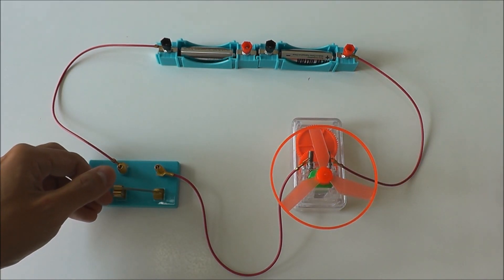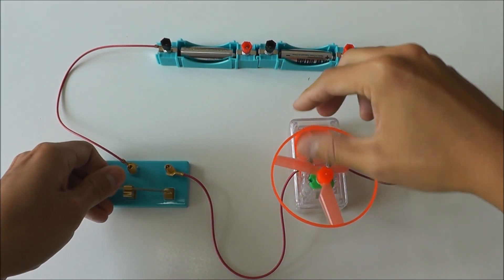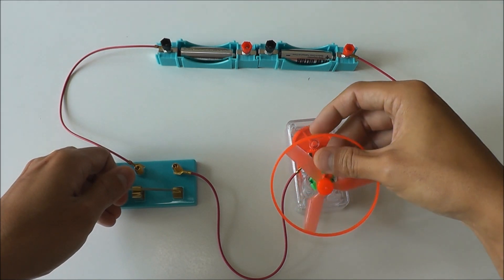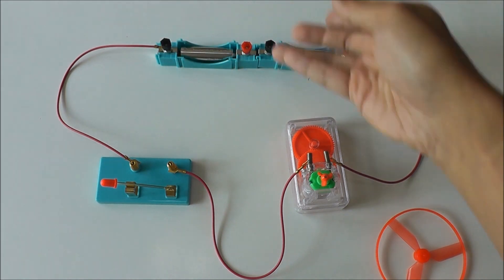you find that when I close the switch, the fan blade will keep falling off. It will not spin properly. When this happens, what you need to do is reverse the polarity